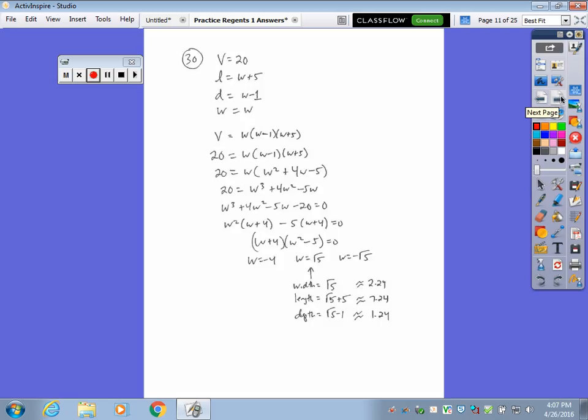Question 30 says Catherine wants to make a box with a volume of 20. So I wrote down volume of 20. The length is 5 more than the width, so I started translating that. L is 5 plus W. The depth is 1 less than the width, and so I'm using W to represent the width. The volume of a box is length times width times height, all three dimensions multiplied, and it has to come out to be 20.